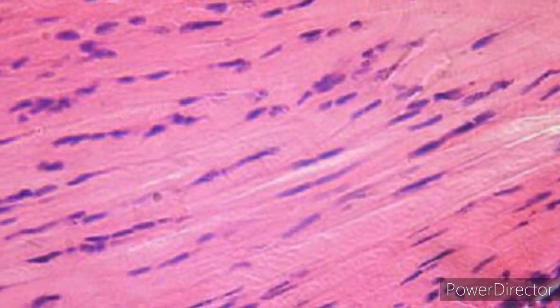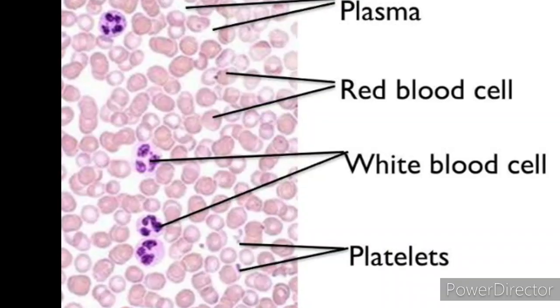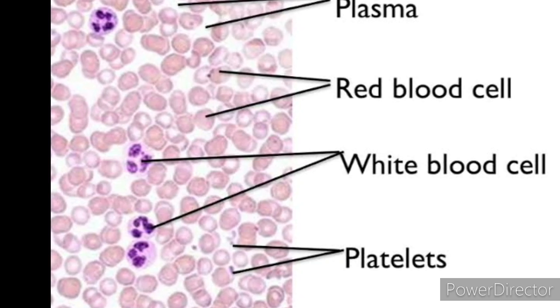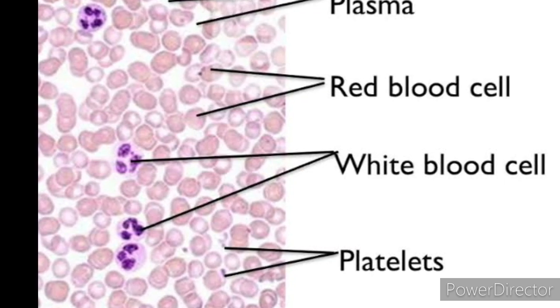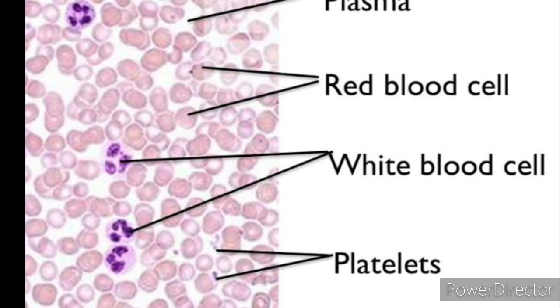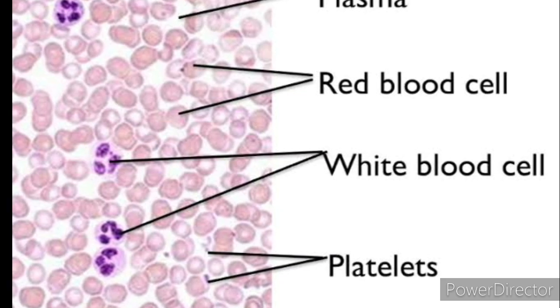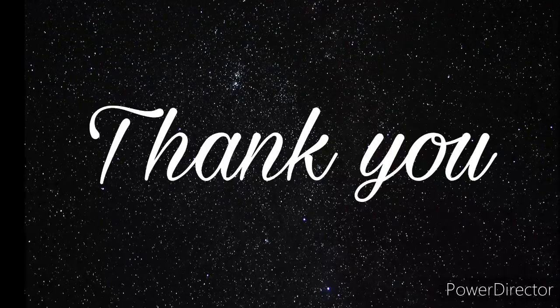One more type of connective tissue is the tendon. It is a type of connective tissue which joins muscle to bone. Along with these, blood is also a connective tissue. Blood helps in the transportation of materials from one place to another, or from one organ to another organ in the body. Blood is also called a fluid connective tissue. We will discuss blood in more detail later.